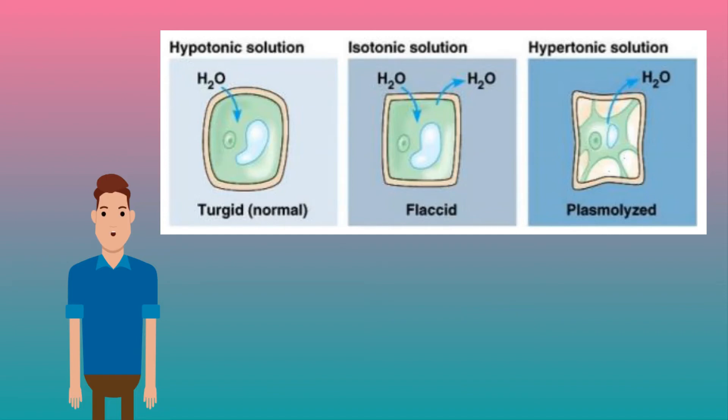If a plant cell is placed in different solutions what will happen? First, a hypotonic solution. Water will move into the cell because the water potential is higher outside the cell.